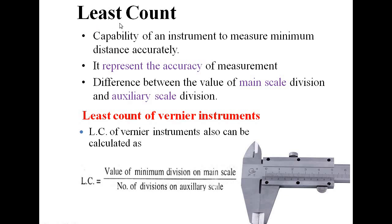The next precise instrument is the vernier caliper. What is meant by least count? The smallest division that can be measured by a particular instrument is called the least count of that instrument. In evaluating the least count of a vernier caliper, it represents the accuracy of the instrument. Least count of a vernier instrument is calculated as the value of the minimum division on the main scale divided by the total number of divisions on the auxiliary scale.